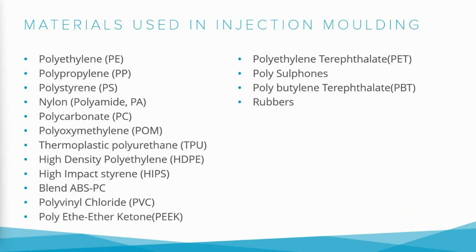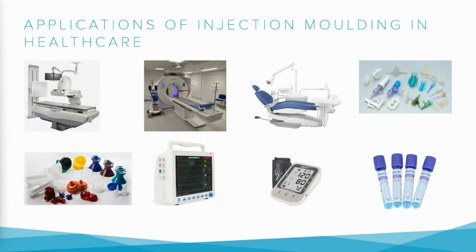These are some of the materials used in injection molding: polyethylene, polypropylene, polystyrene, nylon, etc. Some of the key applications include X-ray machines, CT scan machines, dental check-up machines, fittings for surgical use, ECG machines, oximeters, and syringes for collecting blood samples. Right from nano parts to bigger parts, there are numerous applications coming out of the injection molding process.